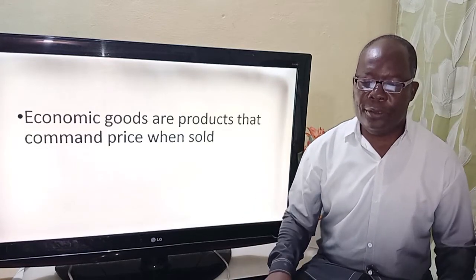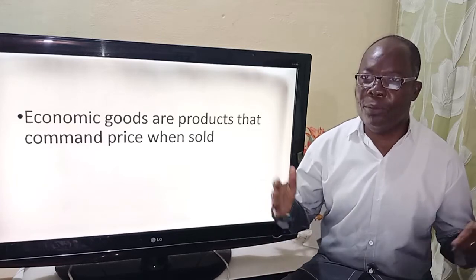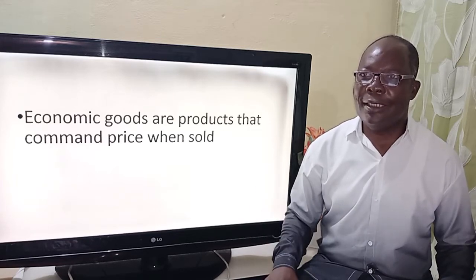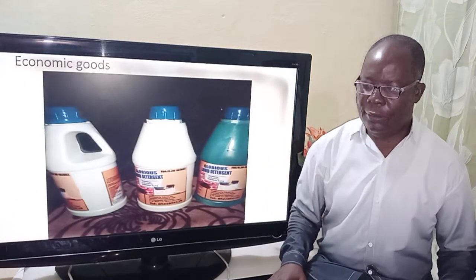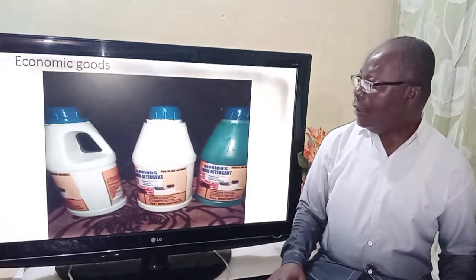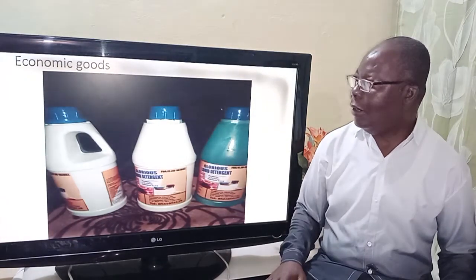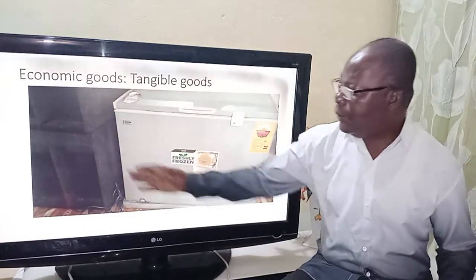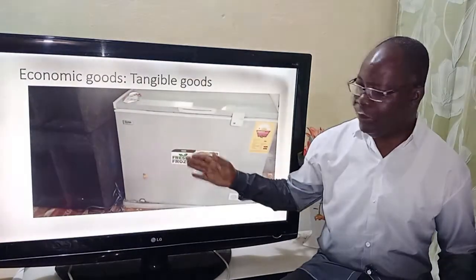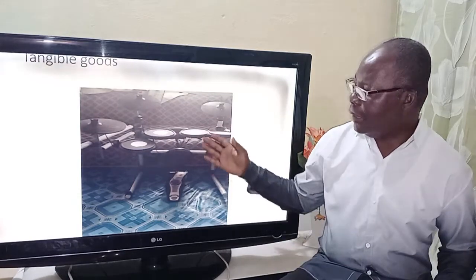What are economic goods? These are products that come with a price when sold. So any product put with a price is an economic good. For example, detergent is one of the economic goods. We also have speakers, refrigerator, and a set of drums.